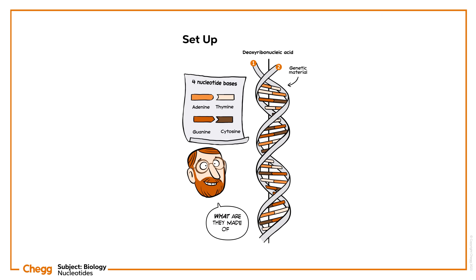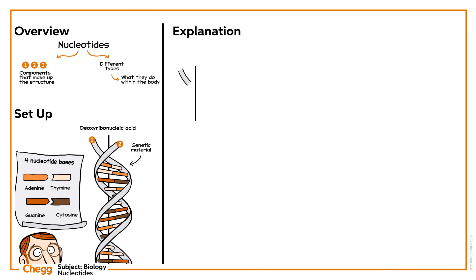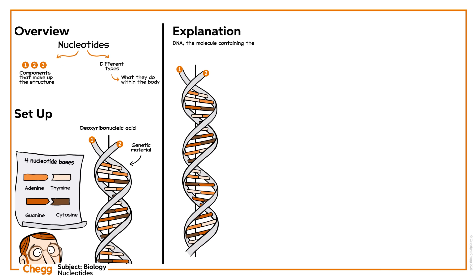But what are nucleotides made of? Let's find out more about nucleotides and their structure. DNA, the molecule containing the information to build and maintain the normal functioning of an organism, is made from long chains of organic molecules called nucleotides. There are four different types of nucleotides in DNA, and the only difference between them is their nitrogenous base, whether it's A, T, G, or C.